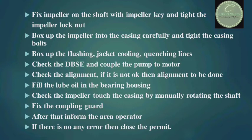Box up the impeller back plate. Fix the impeller on the shaft with the impeller key and tighten the impeller lock nut. Box up the impeller into the casing carefully and tighten the casing bolts. Box up the flushing jacket, cooling, and quenching lines. Check the DBSA and couple the pump to the motor. Check the alignment — if not okay, perform alignment. Fill lube oil in the bearing housing. Check that the impeller does not touch the casing by manually rotating the shaft. Fix the coupling guard and inform the area operator. If there is no error, close the permit.